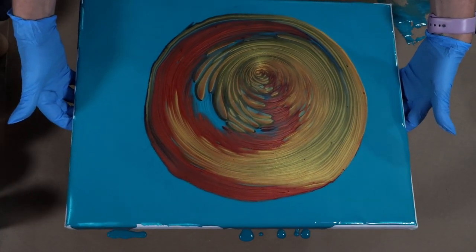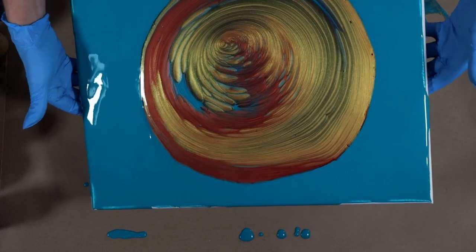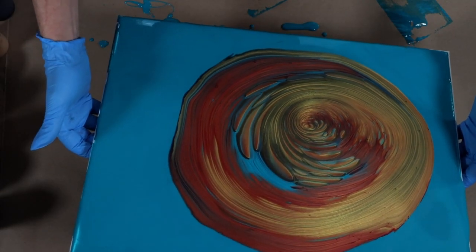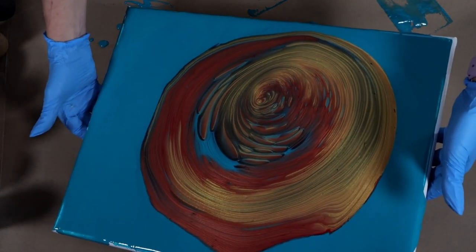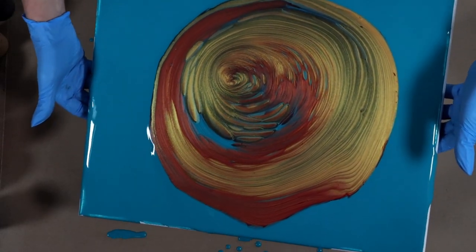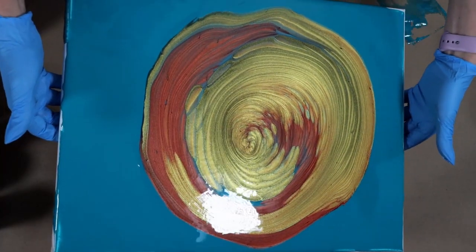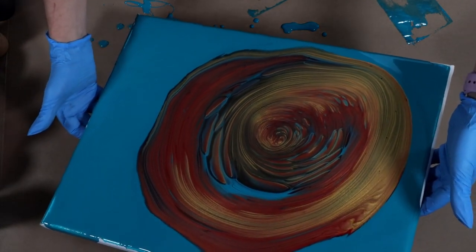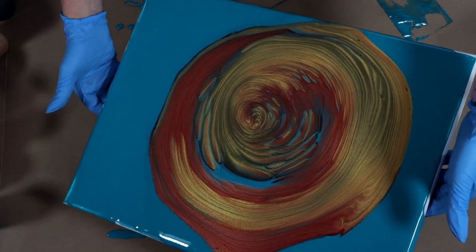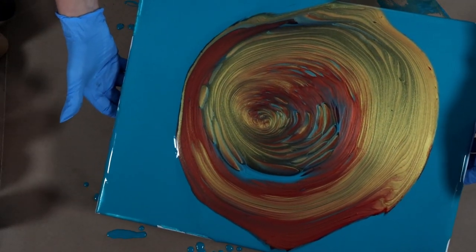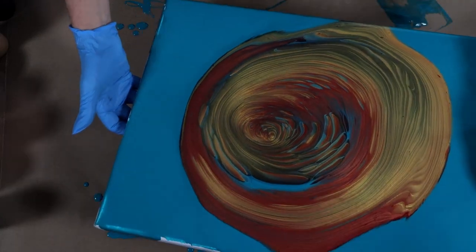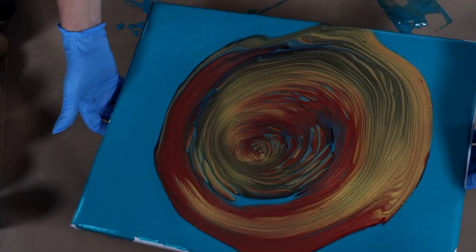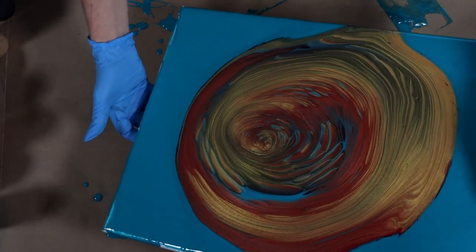Alright, now I'm just gonna go ahead and start swirling around like I like to do. I really want to keep that turquoise that's in the middle there, so I'm trying to decide as I'm swirling how I want to open this up. So I think I'm going to start going - actually I think I'm gonna go around. I think I'm gonna come back. Yeah, I'll go this way.